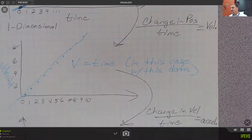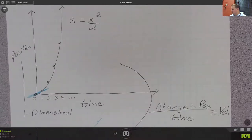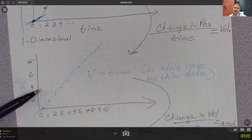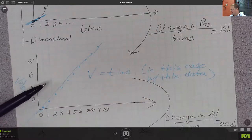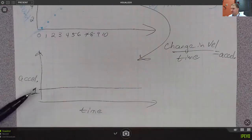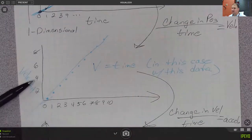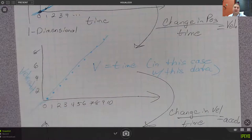The slope of the position graph over any segment is the average velocity over that segment. The slope of the velocity-versus-time graph is the acceleration. So if you're looking at a velocity-time graph and it is linear — a straight line — that means you have constant acceleration.